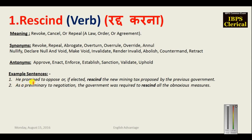Example sentences: 'He promised to oppose or, if elected, rescind the new mining tax proposed by the previous government.' And: 'As a preliminary to negotiation, the government was required to rescind all the obnoxious measures.' Obnoxious means harmful — detrimental and obnoxious both mean harmful.